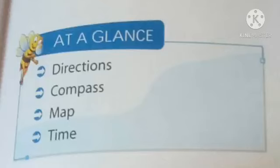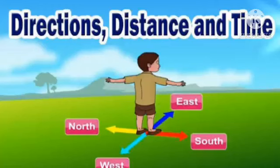So now we come to the chapter. There are four things we have to study today: directions, compass, maps, and time. But today I will discuss only about directions and compass. So now, what are directions? Yes, direction is our position in a particular place with respect to another place.